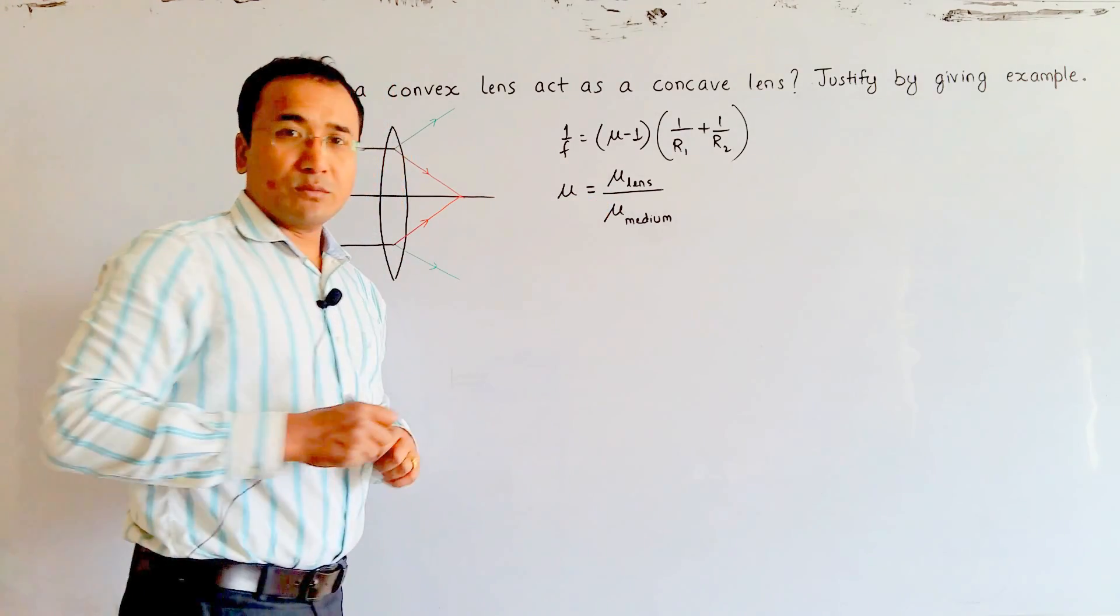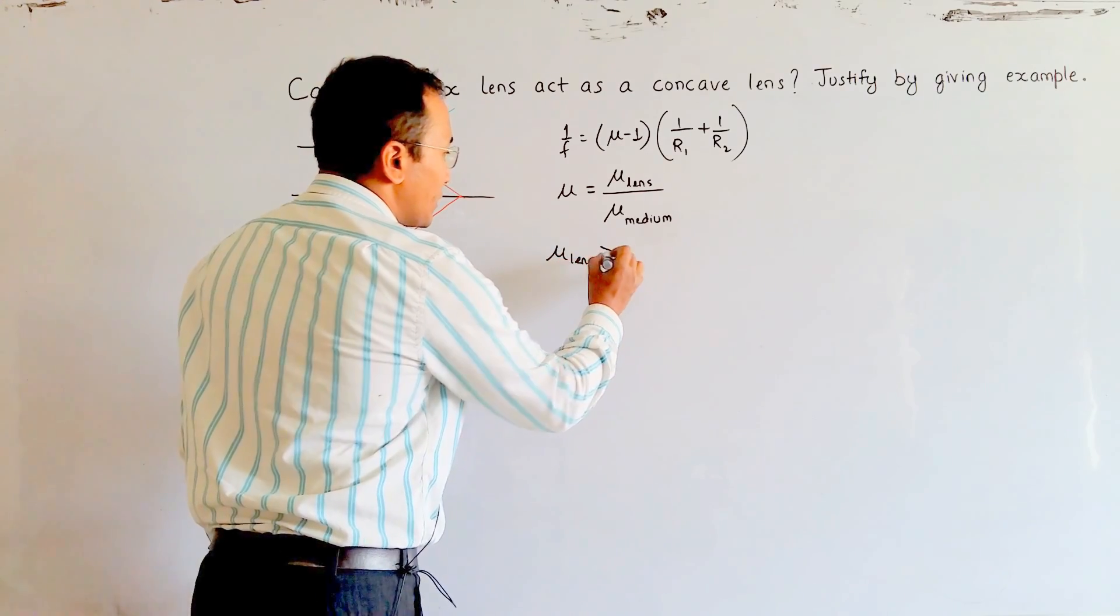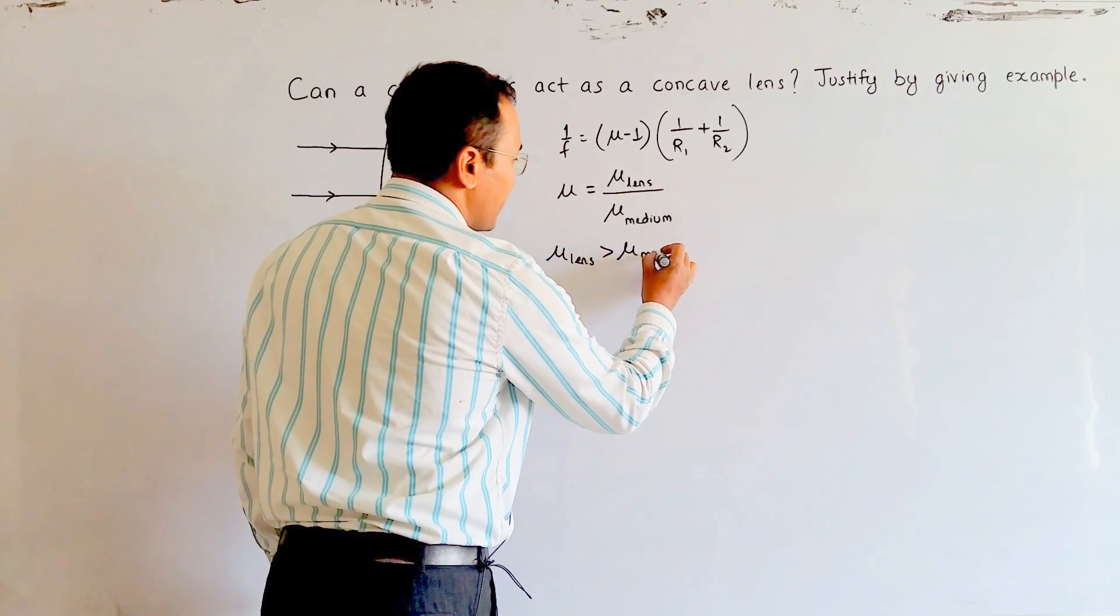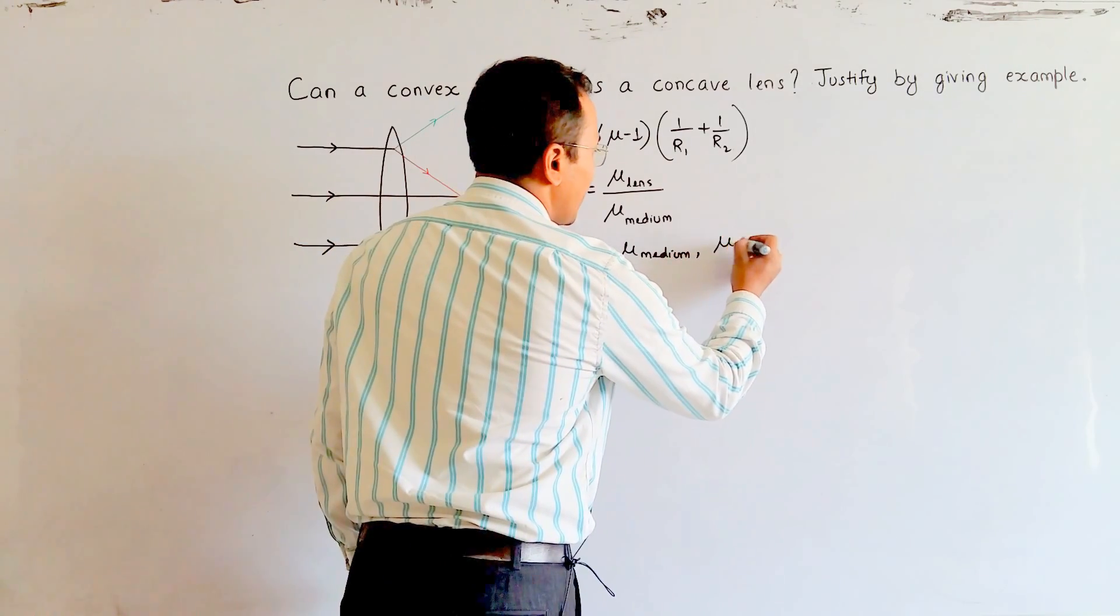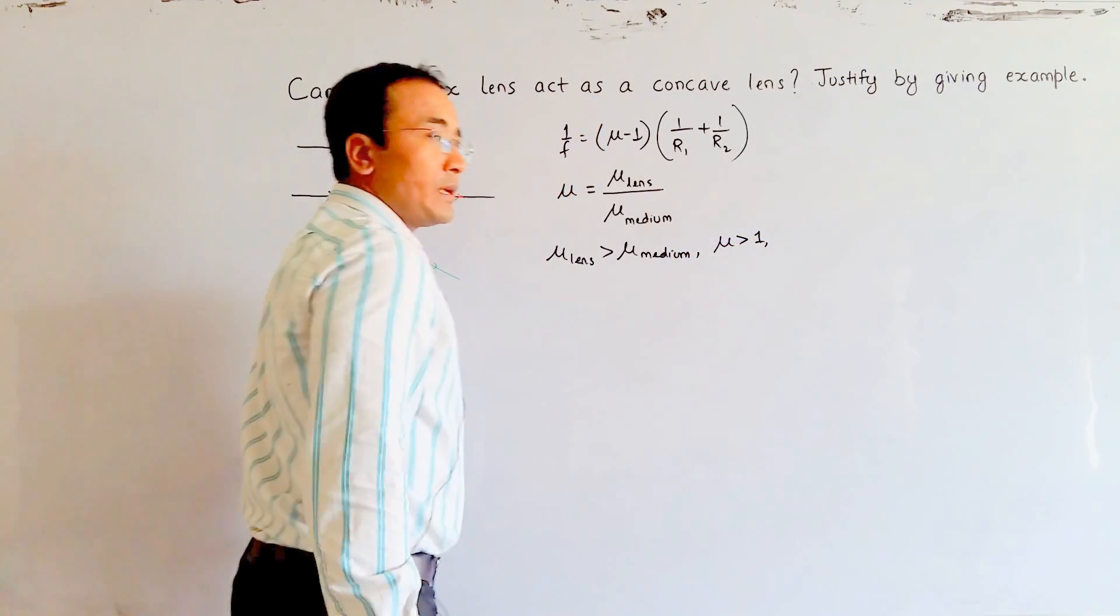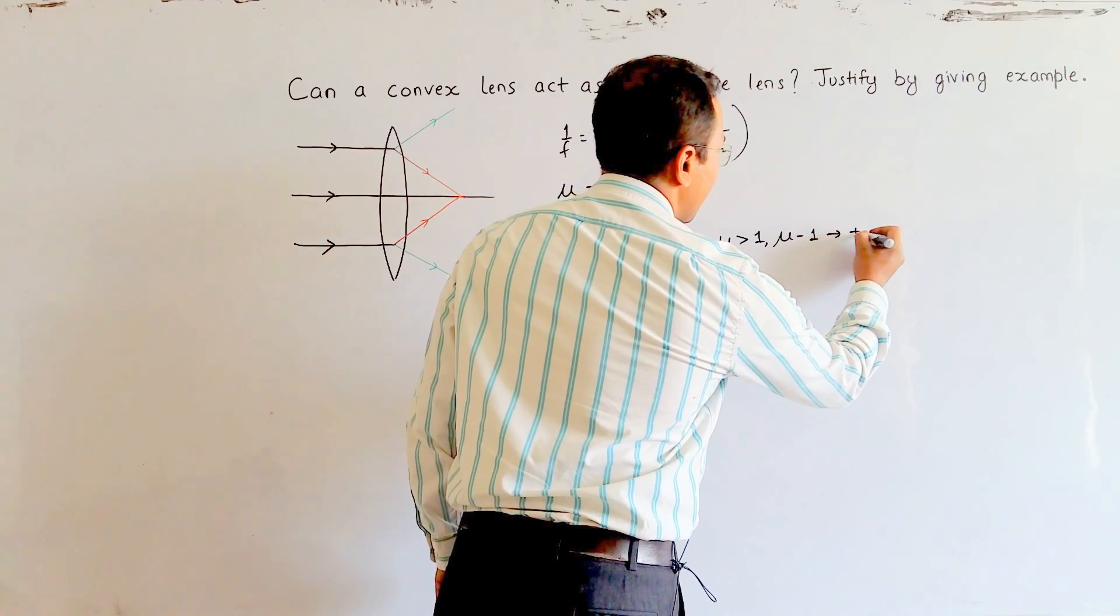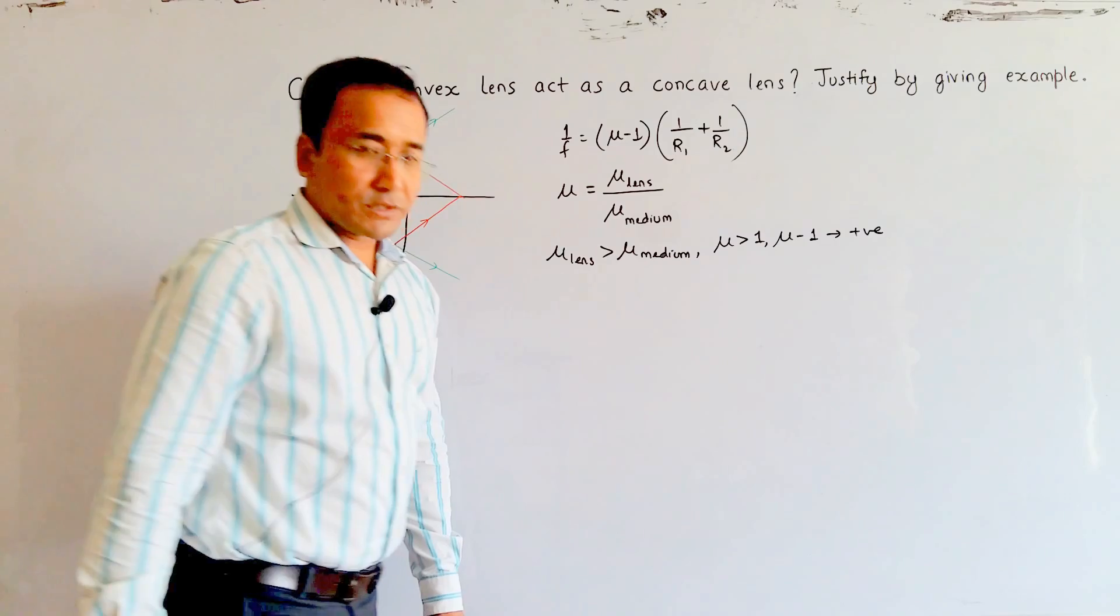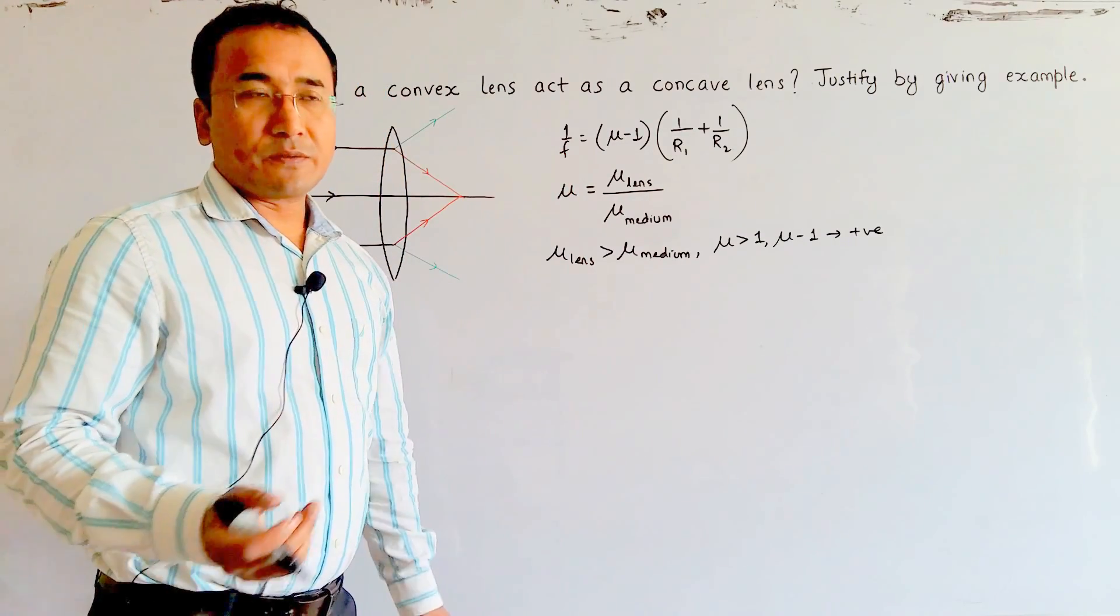If we have μ_lens is more than μ_medium, this makes μ more than 1, which makes (μ - 1) a positive quantity. If this is positive, we will have 1/f is positive and f is positive. Positive f means that the lens will be convex.